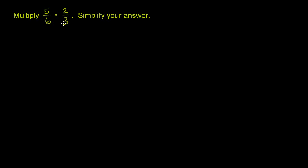We're asked to multiply 5/6 times 2/3 and then simplify our answer. So let's just multiply these two numbers. So we have 5 over 6 times 2 over 3. Now when you're multiplying fractions, it's actually a pretty straightforward process.